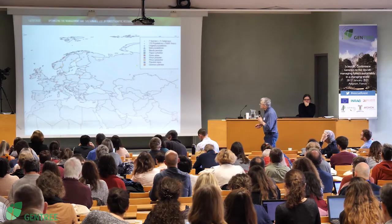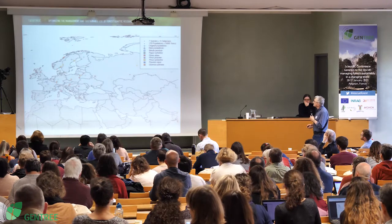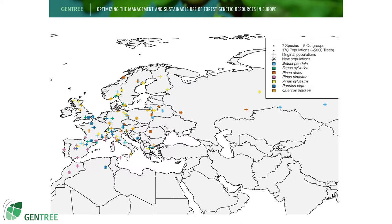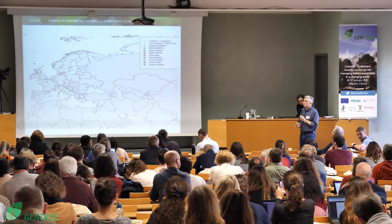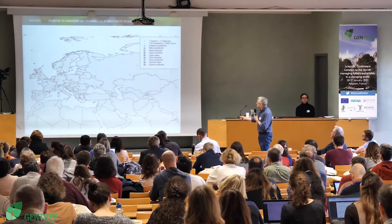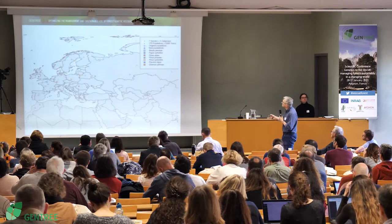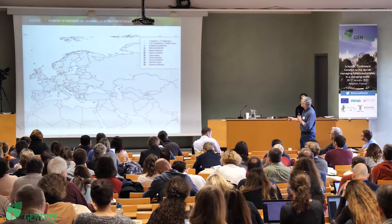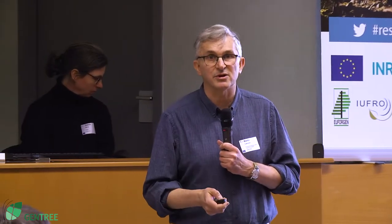In connection with work package three, we put in place 170 populations corresponding to 5,000 trees. This includes the seven species plus some outgroups — for instance, it doesn't make sense to work on Picea abies without Picea obovata. Each cross on the map represents a pair of populations. Stars indicate species added later to the basic design, which are not necessarily in pairs.